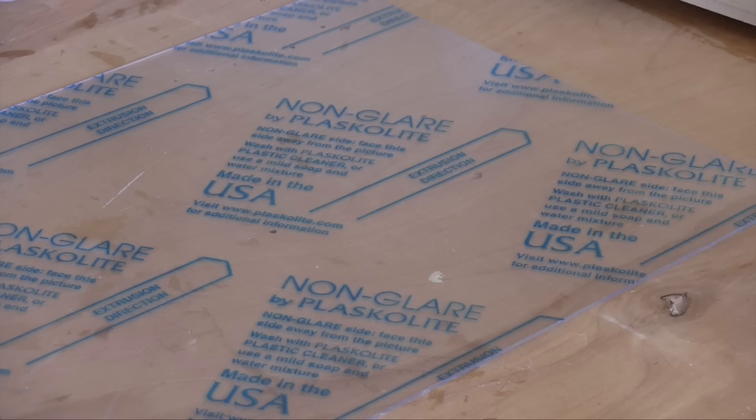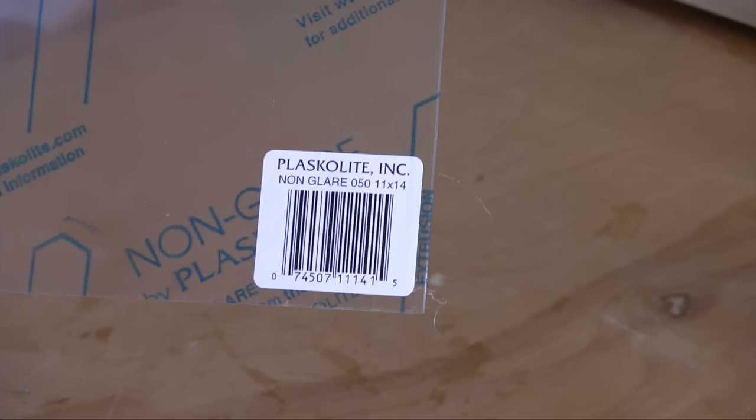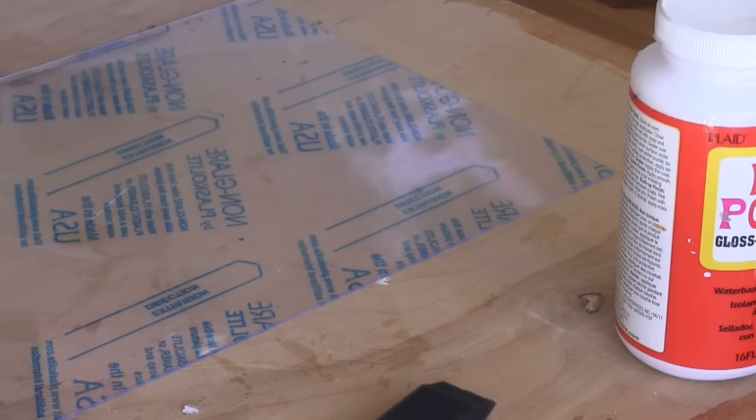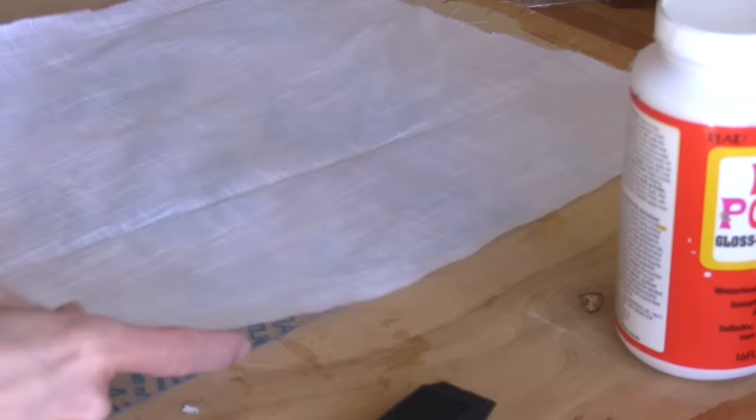For the light diffuser, I used a sheet of non-glare plexiglass that's 11 inches by 14 inches. I took off the protective plastic cover from the shiny side and covered it with sheer white fabric.